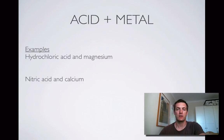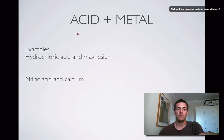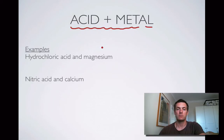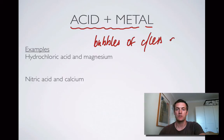Acid and metal — remember we've done writing the equation for this. This produced magnesium chloride and hydrogen in the case of the first reaction. Now in general when these reactions happen and we form hydrogen, we're always going to see bubbles of colourless gas. It's not good enough just to say 'colourless gas' because if it weren't for the bubbles, you wouldn't see the colourless gas. This is all about what you're going to see.